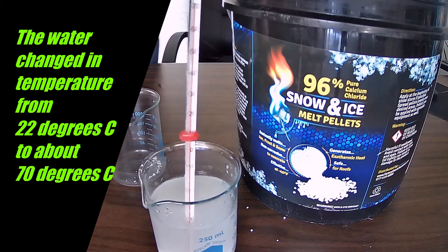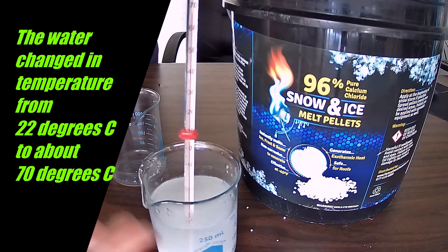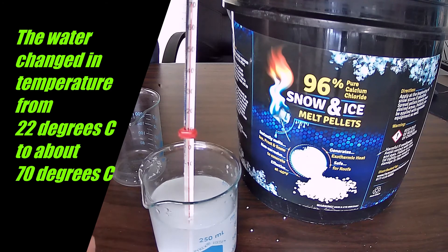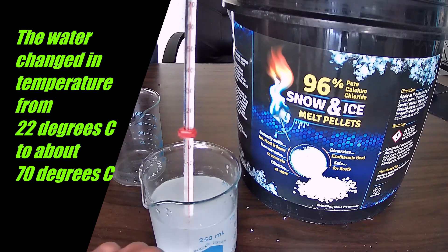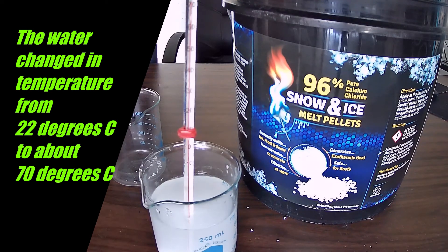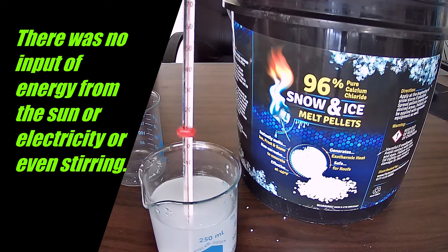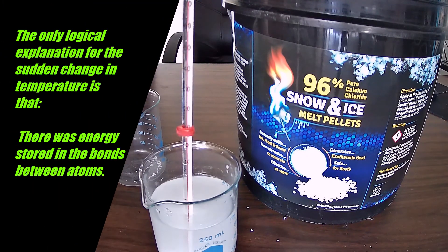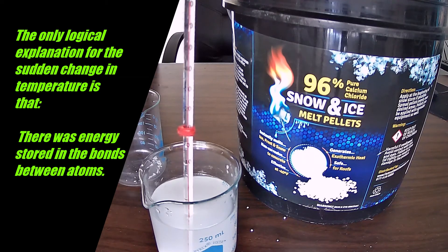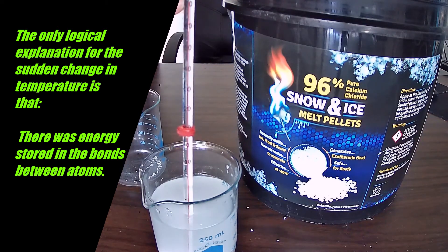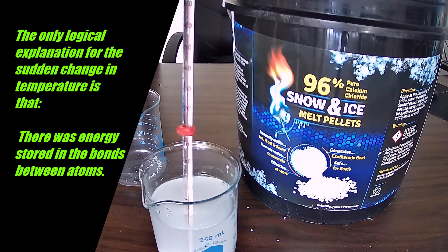So, where did the energy come from? Obviously, we now have some heat being produced. There's thermal energy here, but we started with just a salt, calcium chloride, and water. The energy had to have come from somewhere. So, the only logical explanation for this change in temperature is that there had to be energy in the chemicals themselves, and when they went through a chemical change, some of that energy was released.